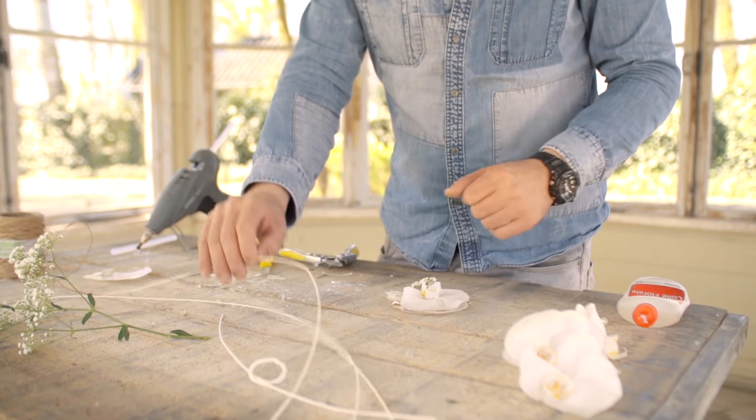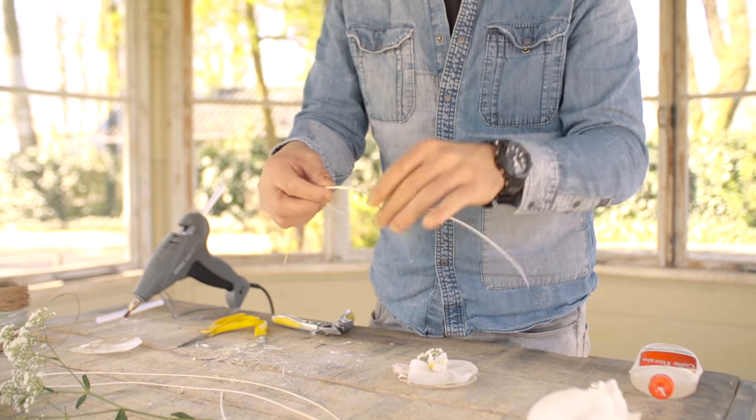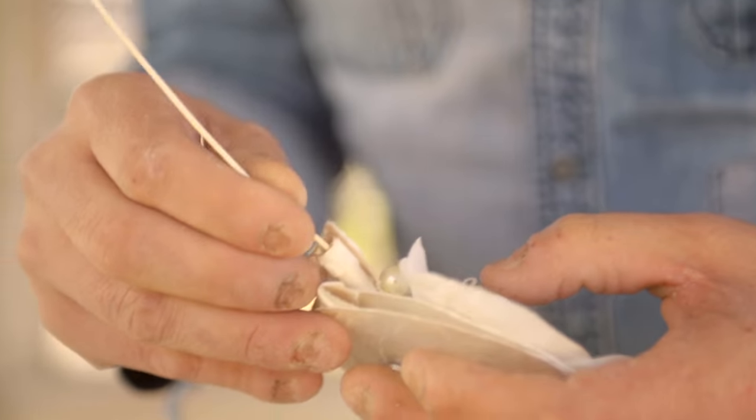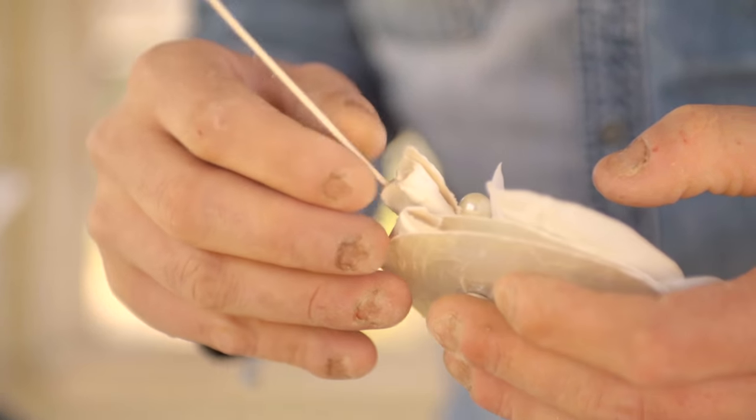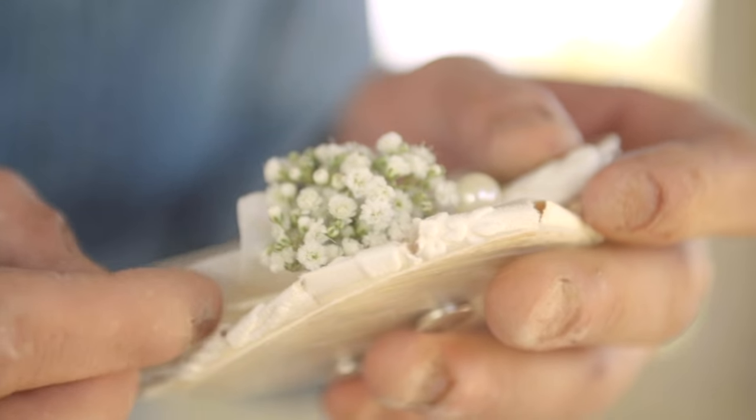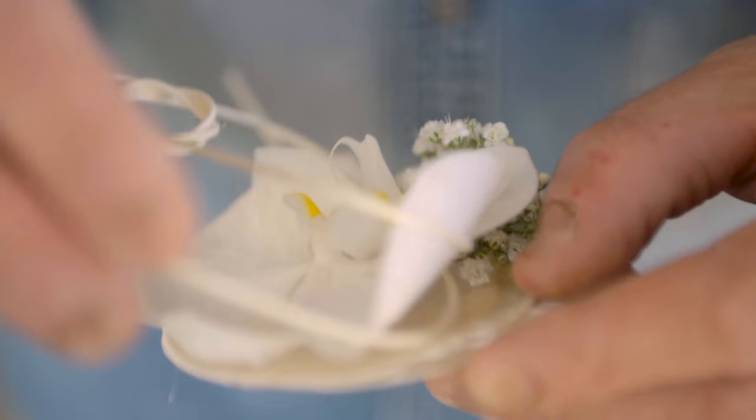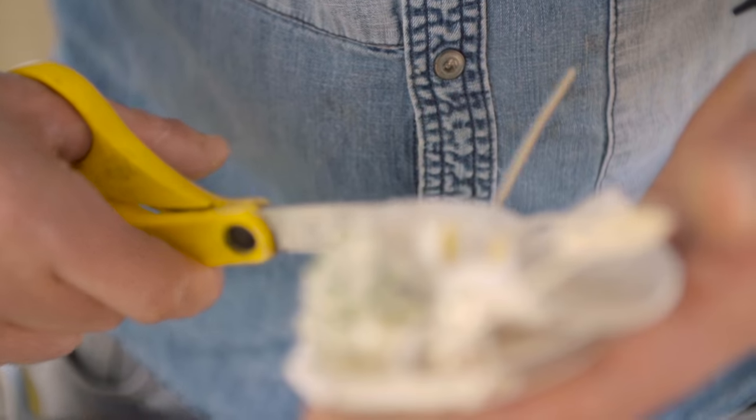Then we can create nice little details with this flexible wicker. Make it a little loop. I'm going through this little thing I made before. So I'm carefully bending, creating a little loop. Then this one, this one's here. Cut those off really short.